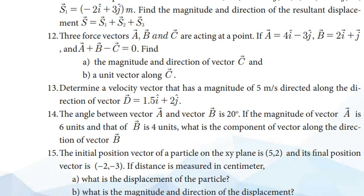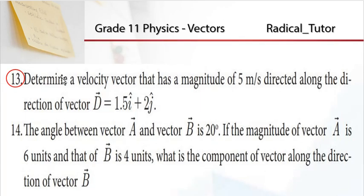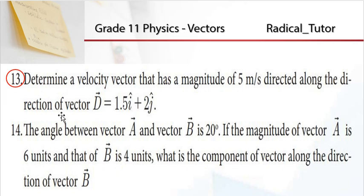This is question number 13. Let's determine a velocity vector that has a magnitude of 5 m per second directed along the direction of vector d = 1.5i plus 2j.